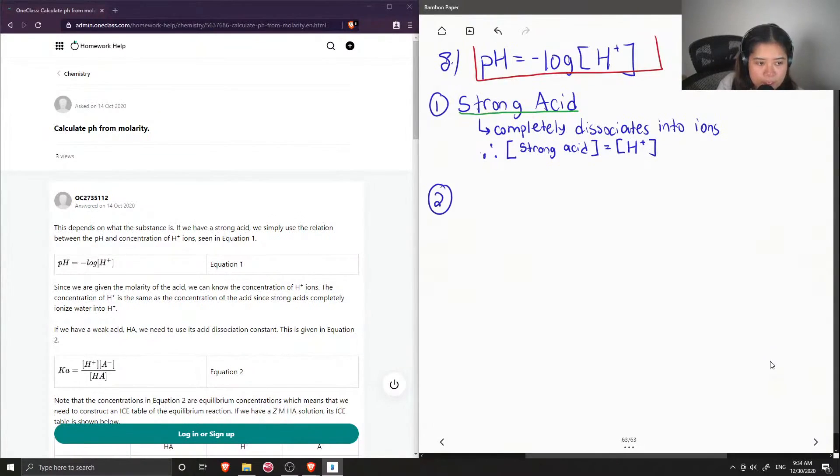The second scenario is if we had a weak acid. Weak acids only partially dissociate into their ions. So in cases like this, we need to construct an ICE table.